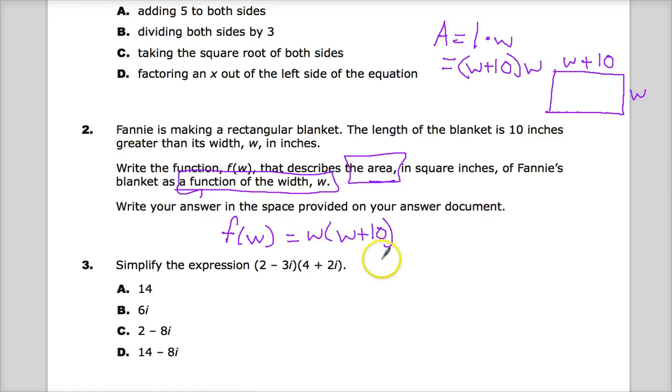But it would also accept it if you multiply these out. So I went ahead and did the distributive property: W squared plus 10W. Here and here. So that's okay too.